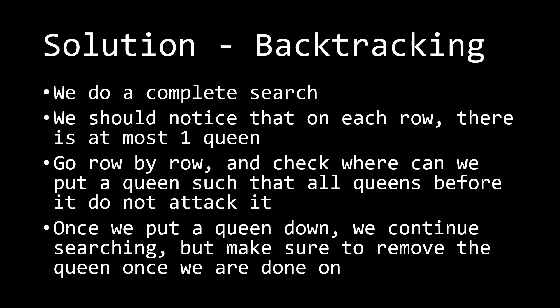For each row, you try to place a queen on all eight of the columns in that row and check whether it is intersecting with any previous queen. Once we put a queen down, we continue searching, but make sure to remove the queen that we just put down once we are done with that path.